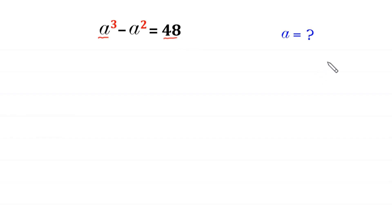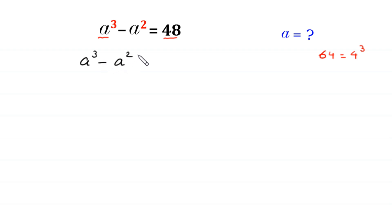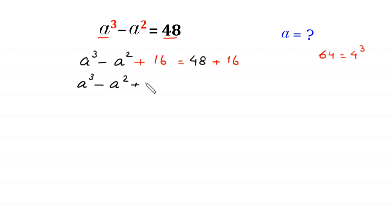The nearest perfect cube to 48 is 64, which is equal to 4 cubed. So to make 48 into 64, we add 16 to both sides: a cubed minus a squared plus 16 is equal to 64.